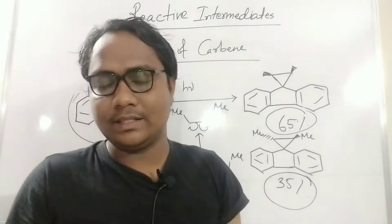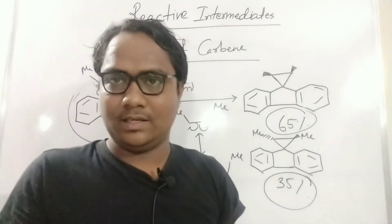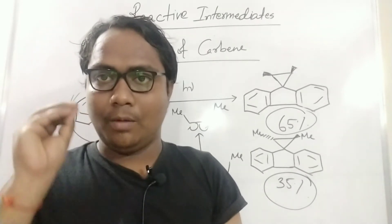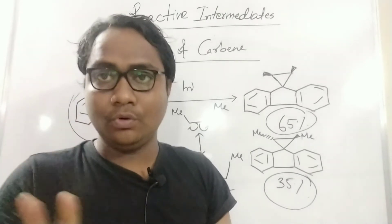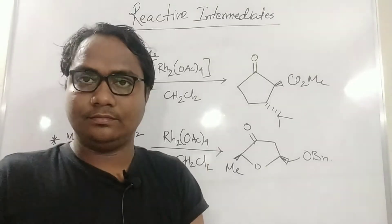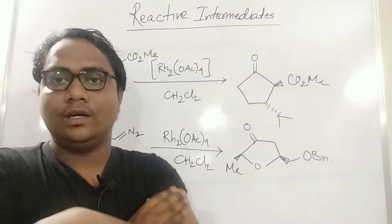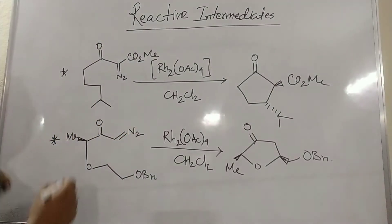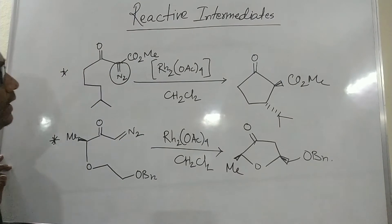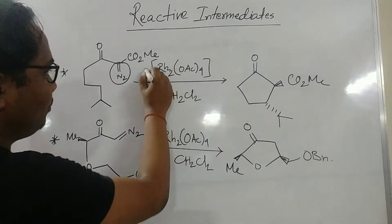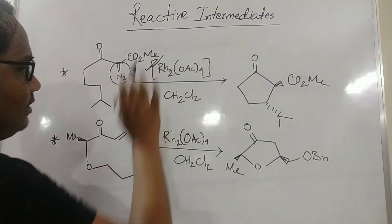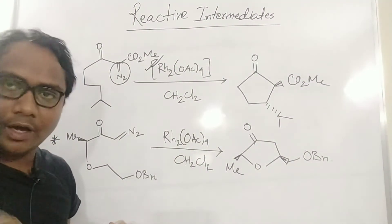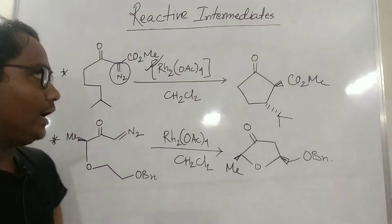If you have any doubt about this, check your basic books. Now I will go through the most important application examples of carbene chemistry. The first example: we have a diazo (α-diazo) compound and rhodium metal. I previously mentioned that if a diazo group is present and you use rhodium metal, carbene will generate from the diazo position.